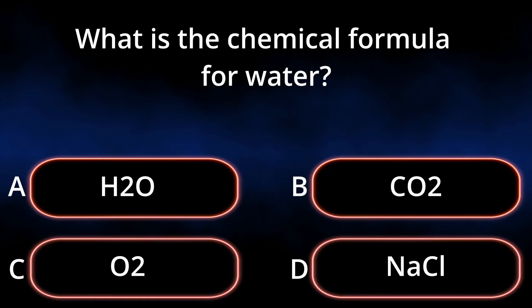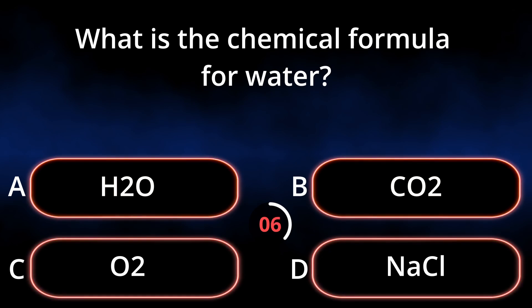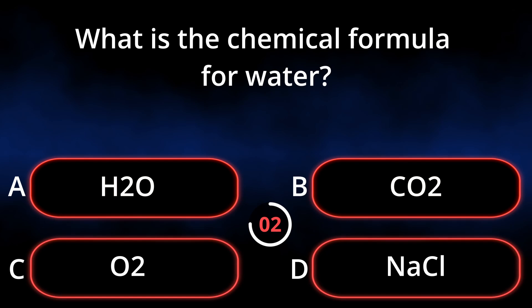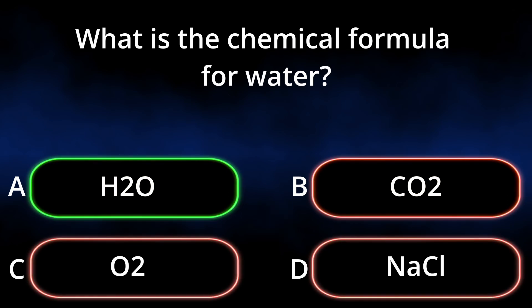What is the chemical formula for water? A. H2O. B. CO2. C. O2. D. NaCl. Answer: H2O.